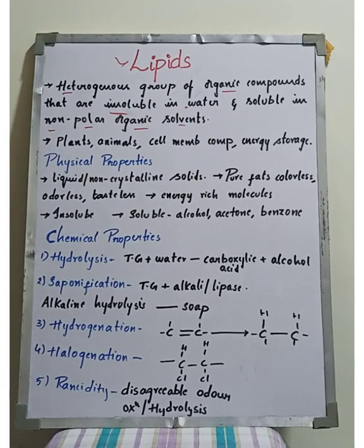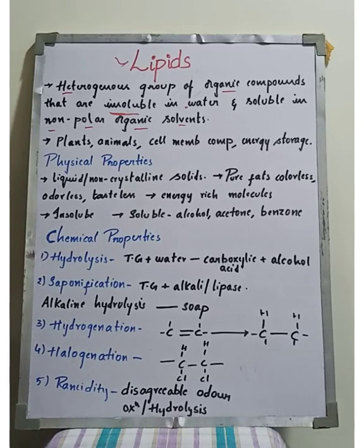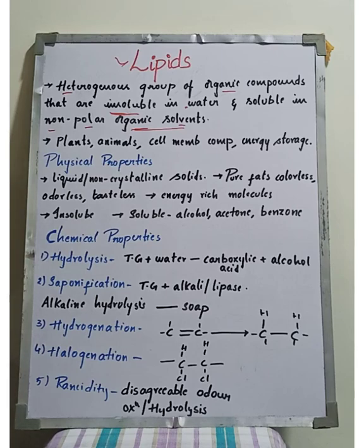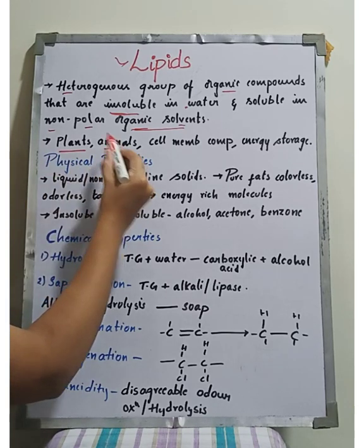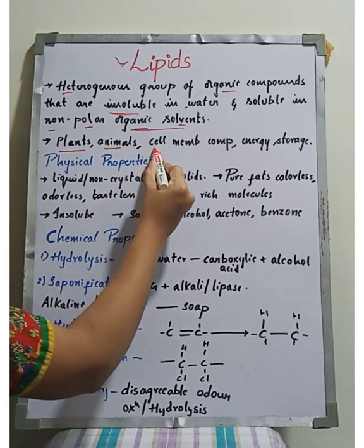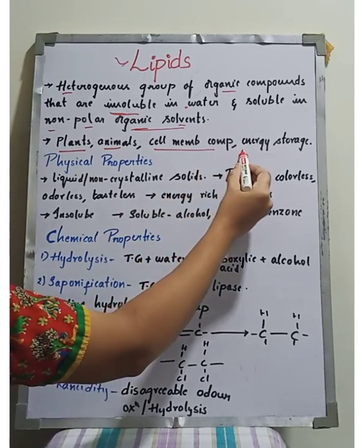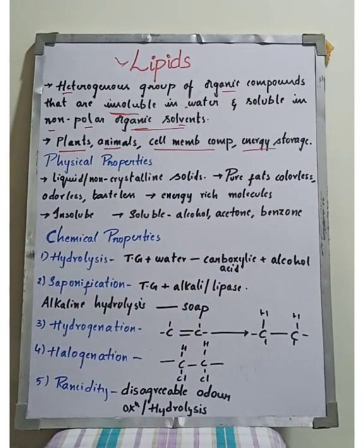The important feature of lipids is that they are water insoluble, whereas organic solvents such as benzene and alcohol are solvents in which they are soluble. Lipids are found in plants, animals, bacteria, and cell membranes. Phospholipids are important components of cell membranes, and a main function of lipids is energy storage in the form of fats.